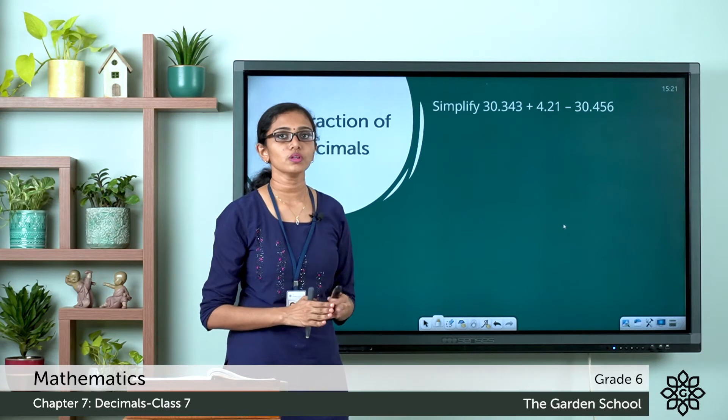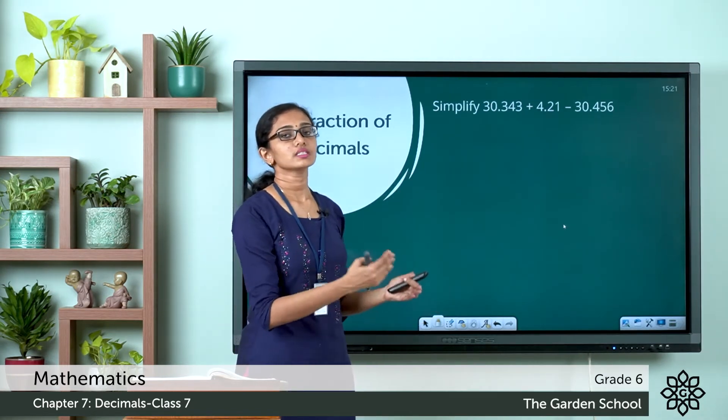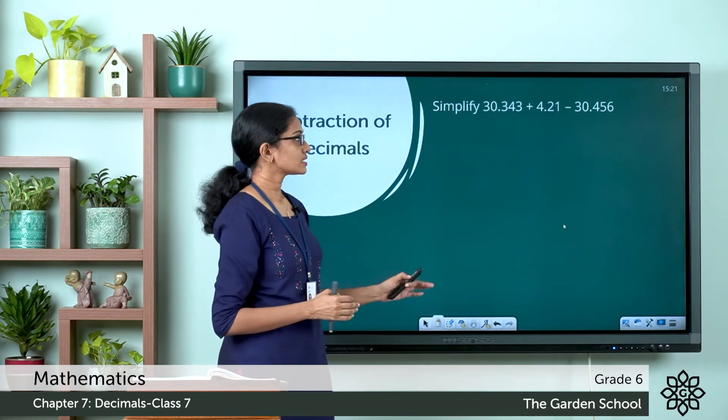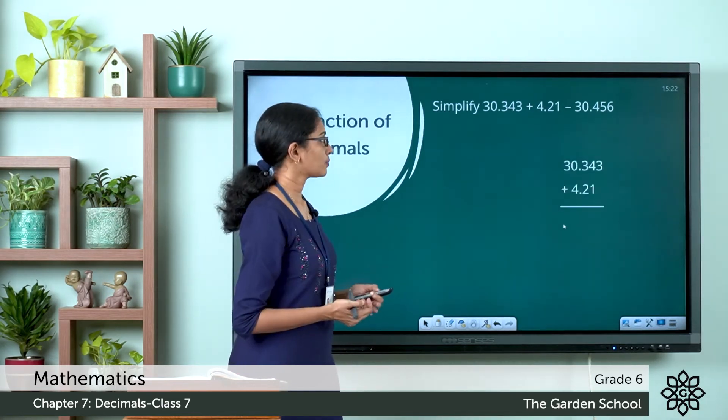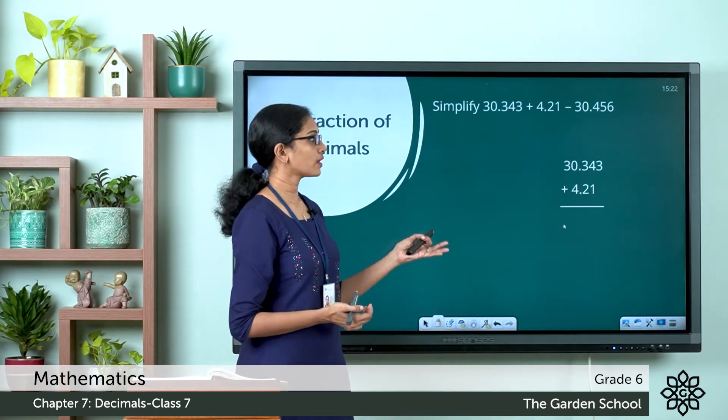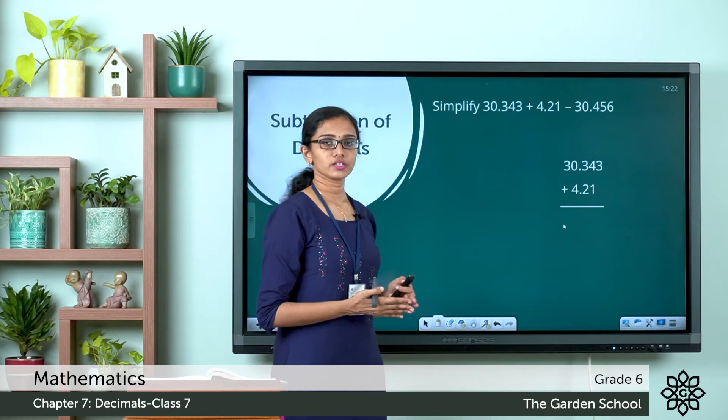See by the BODMAS rule, we are supposed to do the addition part first, then go to the subtraction part. So let's take the numbers which have to be added. So the numbers are 30.343 and 4.21. So these are the numbers to be added. So let's start the addition process.